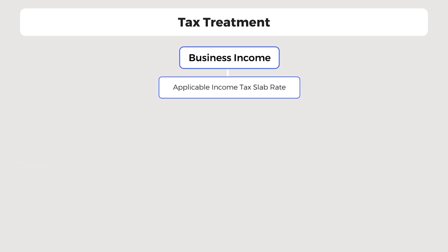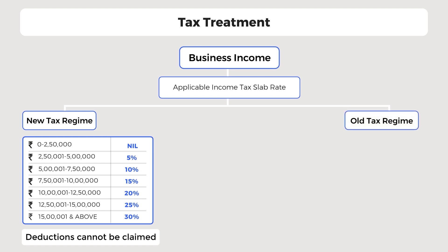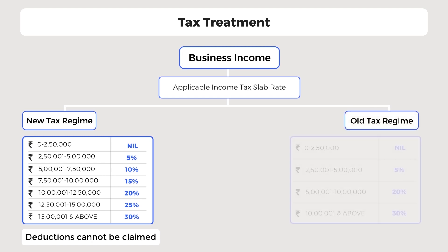Finance Minister Nirmala Sitharaman introduced the new income tax regime in Budget 2020. It allows the taxpayer to choose between the old and new income tax slab rates from financial year 2020-21 onwards. Under the new regime, there are 7 income tax slab rates and you cannot claim deductions. However, under the old income tax regime, there are 4 income tax slab rates and you can continue to claim all deductions.